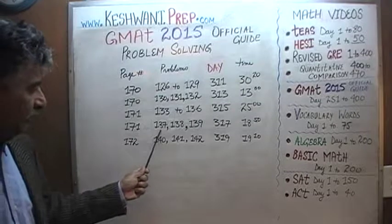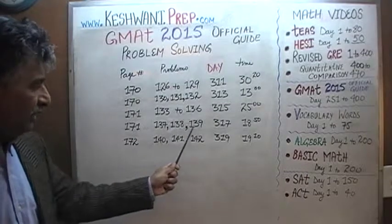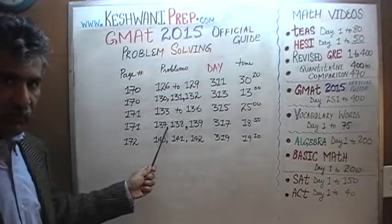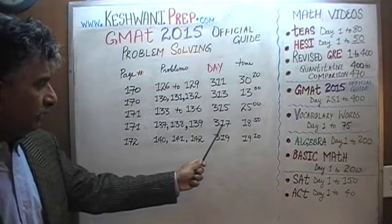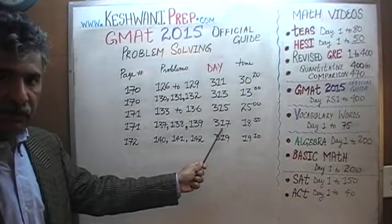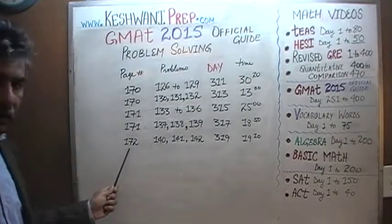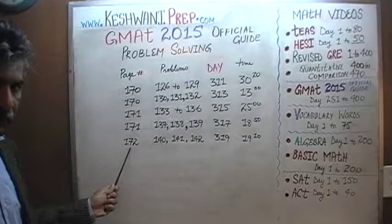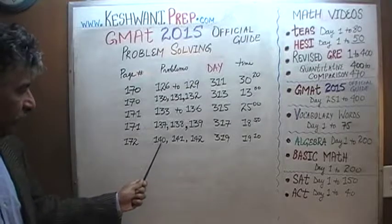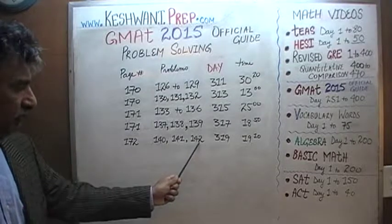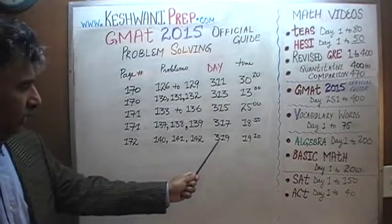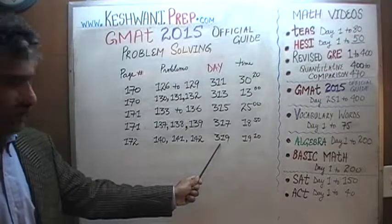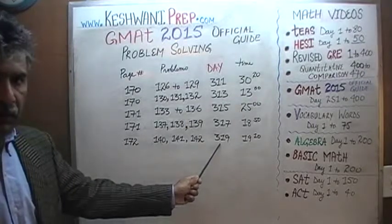Also on page 171, you will find problems 137, 138, and 139 — solutions to those three problems you will find on day number 317. And finally, on page number 172, you will find problems 140, 141, and 142, and solutions to those three problems are presented on day number 319.